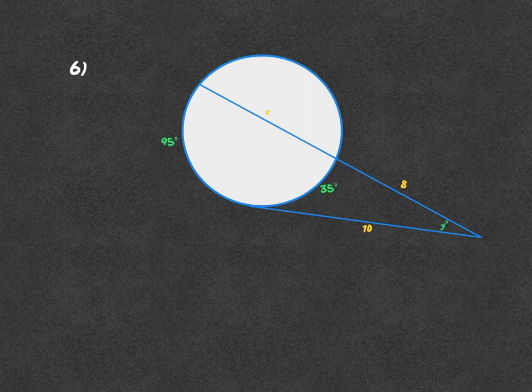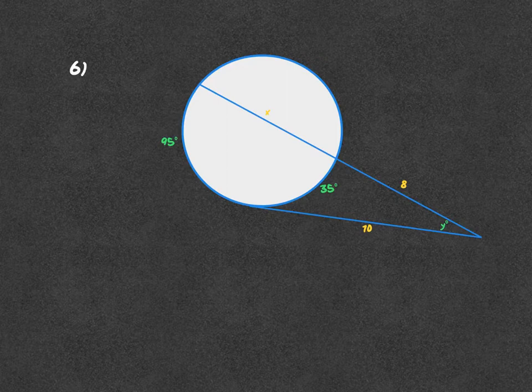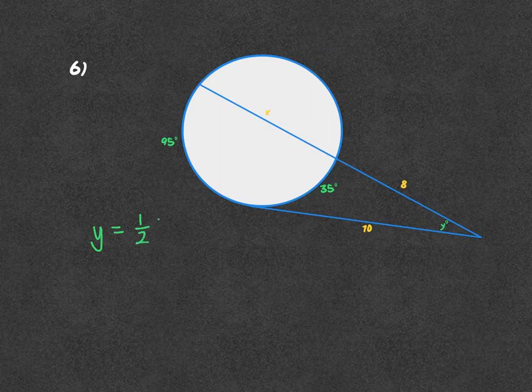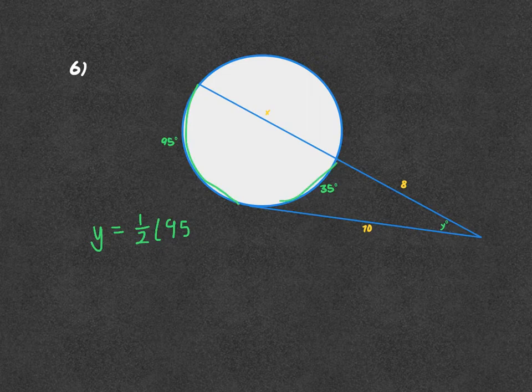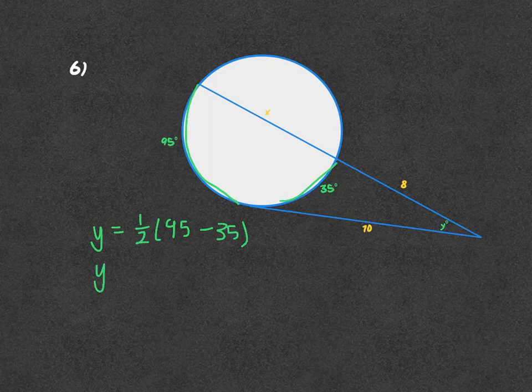For this next one we have the lines intersecting outside the circle once again. To find the angle Y, you're going to take one half of the big intercepted arc, 95, minus the small intercepted arc, 35. So Y equals half of 60, and Y is equal to 30.